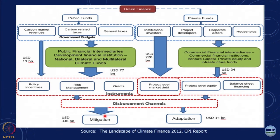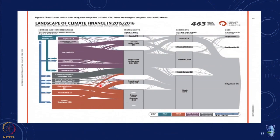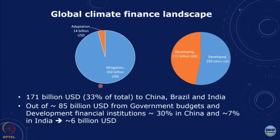If you look at the landscape of climate finance in 2015-16, it shows the different types of flows and the kind of investments required. We are talking of 463 billion US dollars as the order of magnitude of financing. Most of this has been for mitigation — reducing CO2 emissions and climate change. Increasingly, a lot of this financing is going to developing countries, with about one third going to large developing countries: China, Brazil and India.